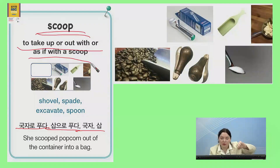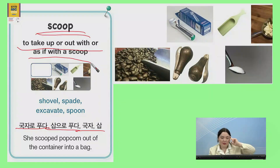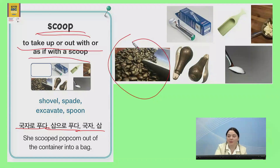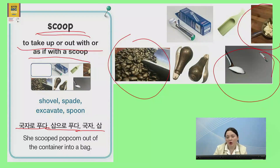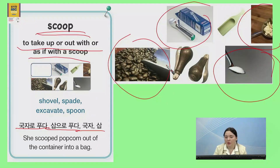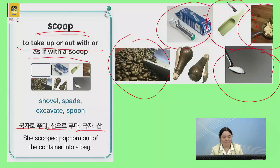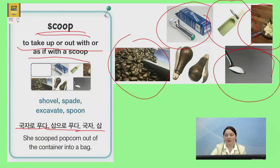막 파 먹는 거, you're scooping. If you scoop ice cream, you are scooping it up — 푸는 거고 먹는 거예요. So, you might scoop up coffee beans, scoop up popcorn, scoop up sugar or salt. You might buy a scoop, an ice cream scoop, or a scoop for your rice to get it out of the container. It means you take up or out with or as if with a scoop. You can also scoop things up with your hands.